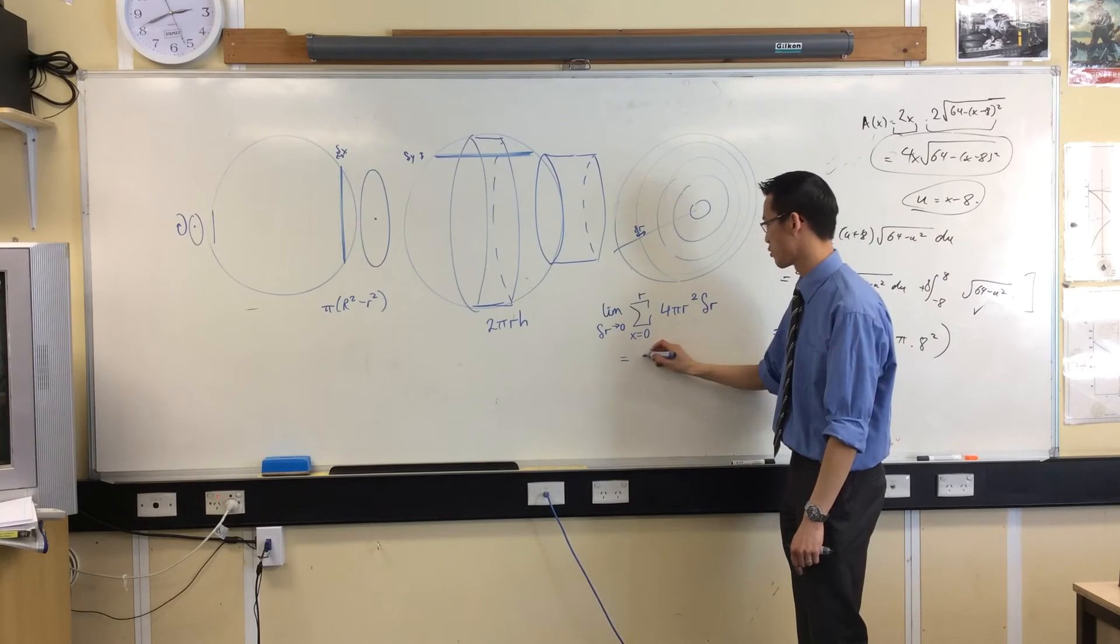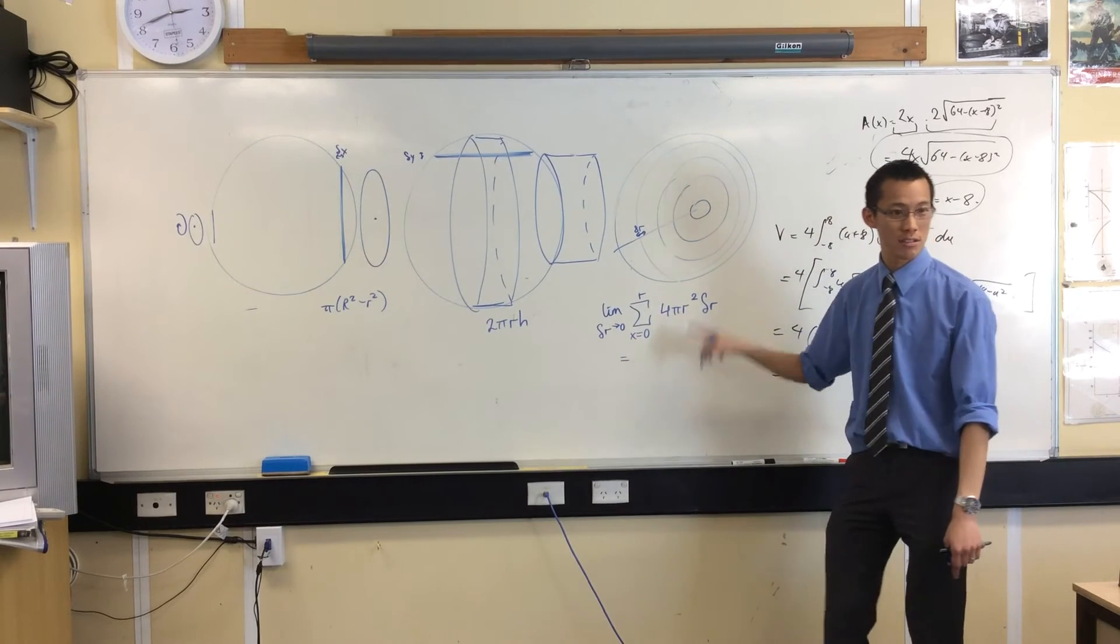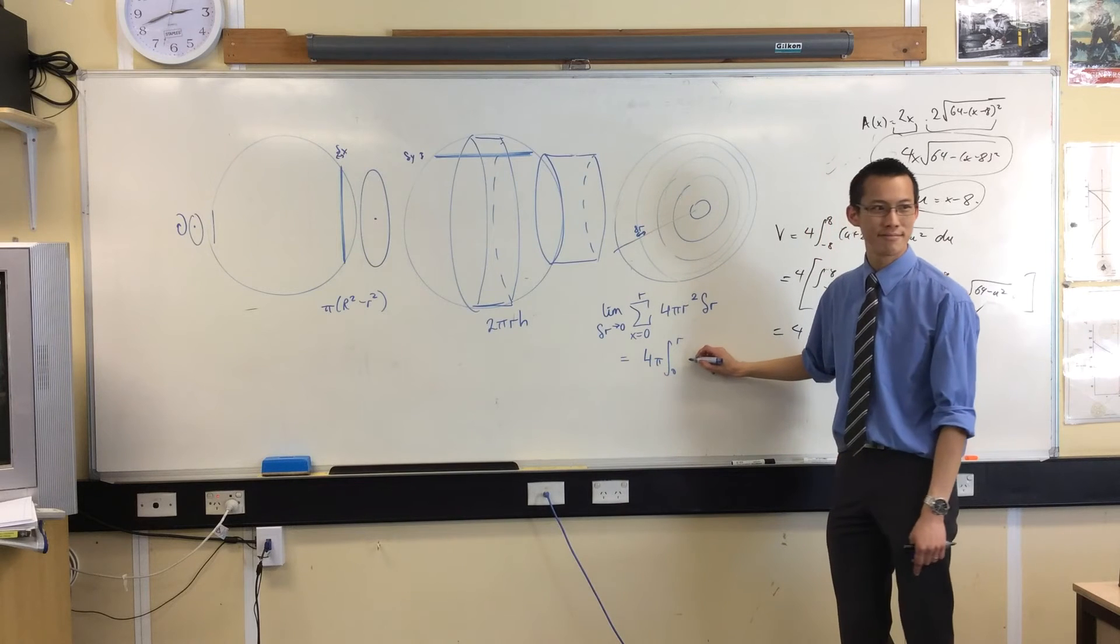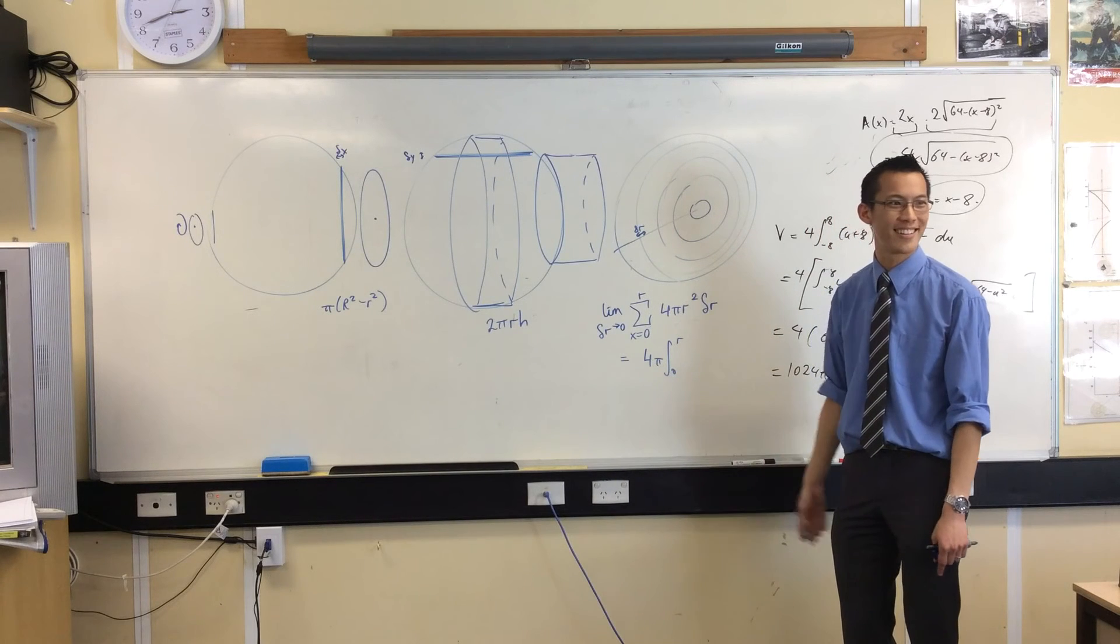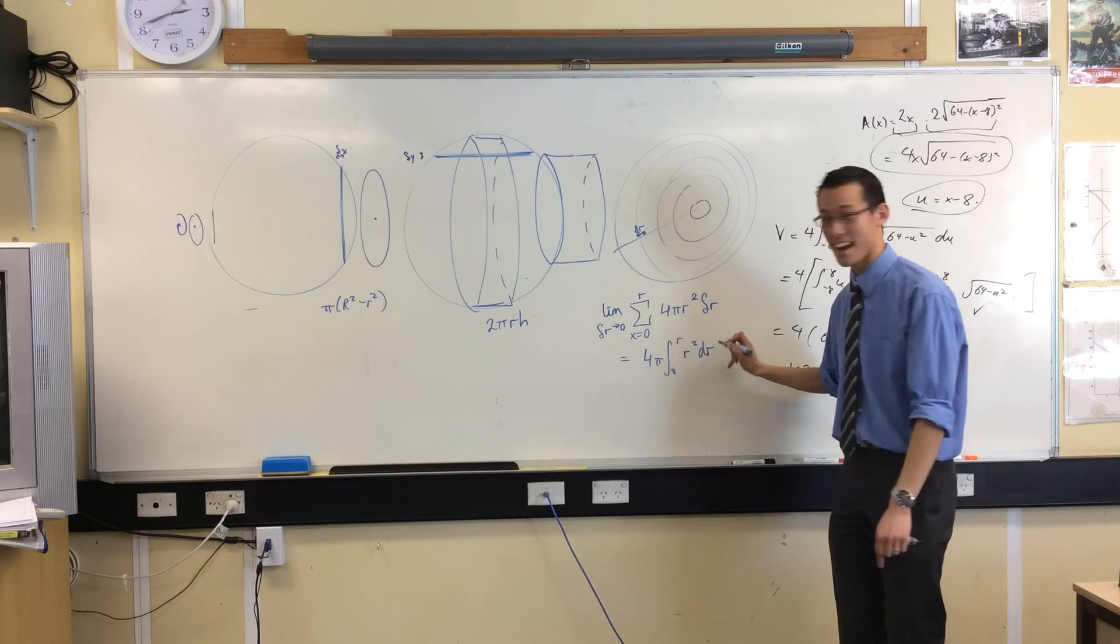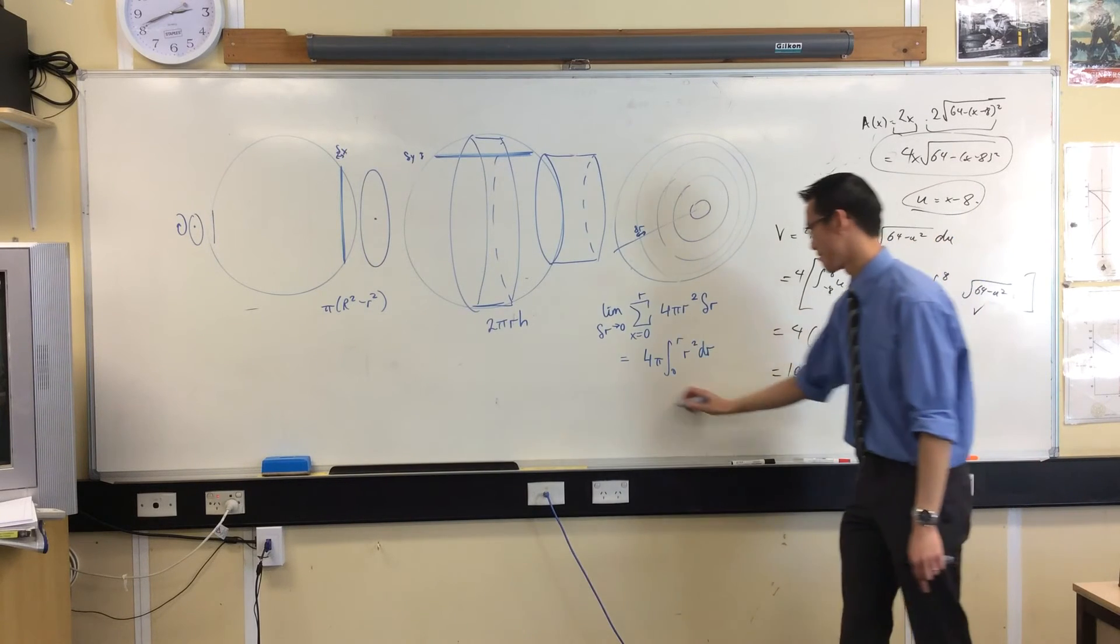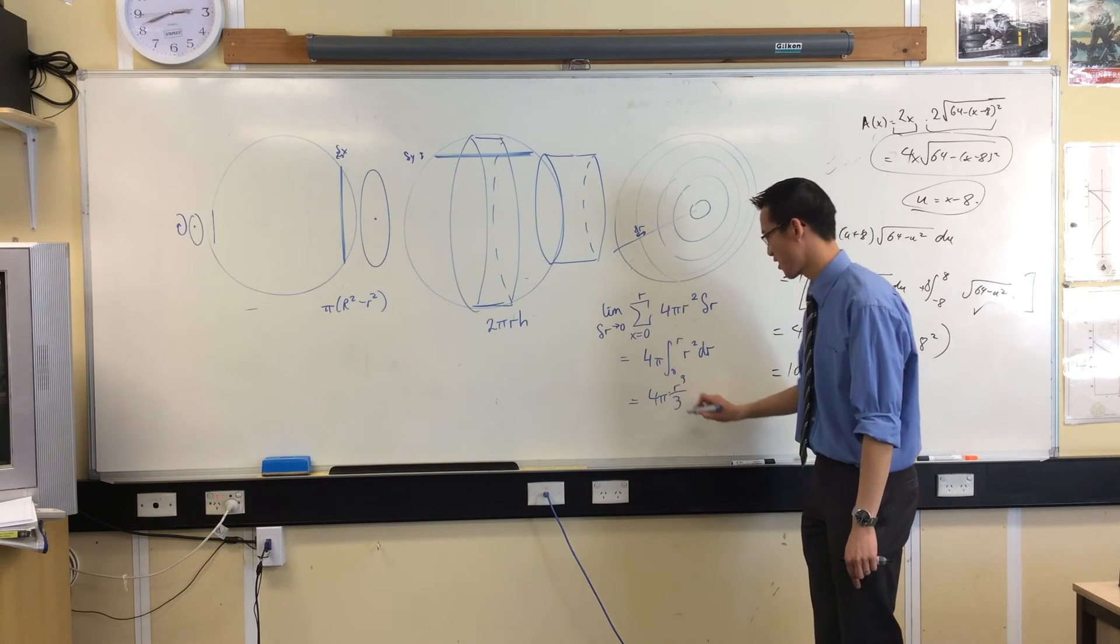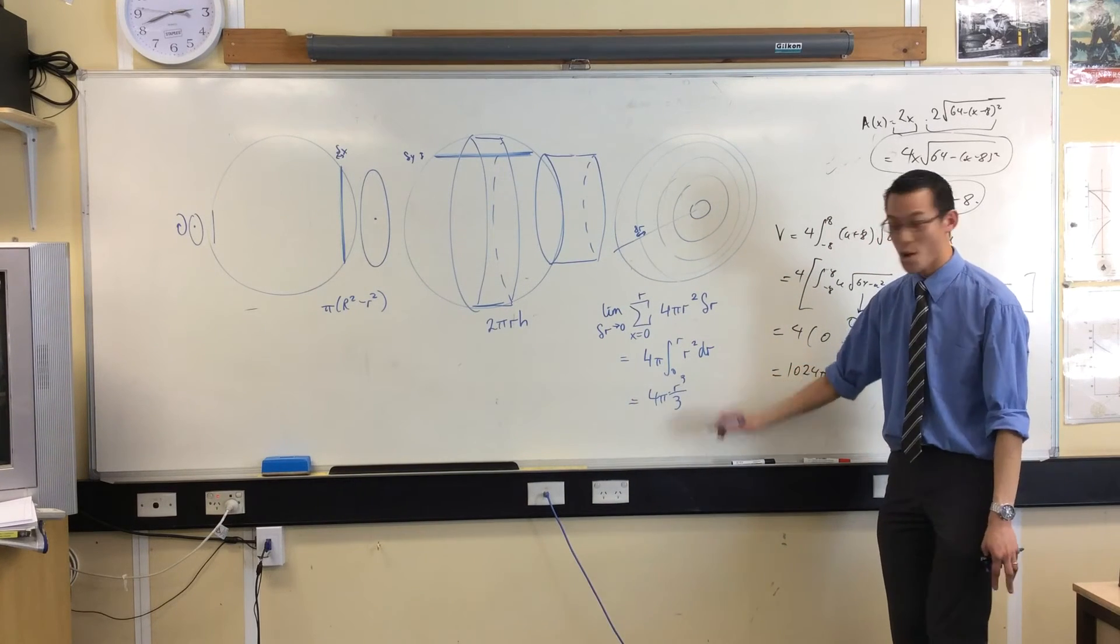Turn this guy into an integral, that 4 pi, you can just chuck them out the front, from 0 to r, r squared dr. Oh, there you go, no constant.